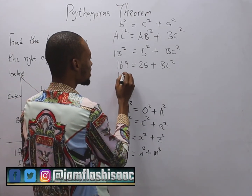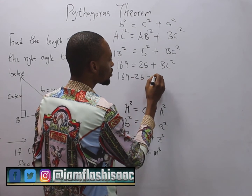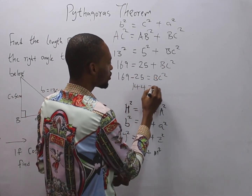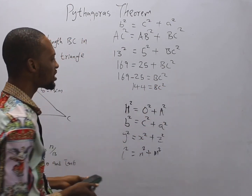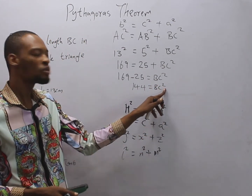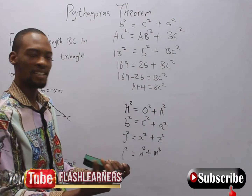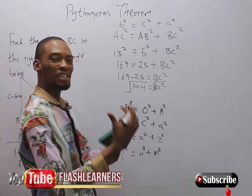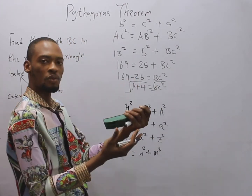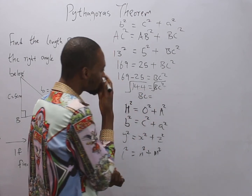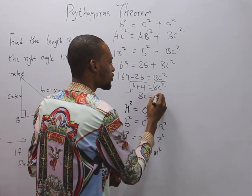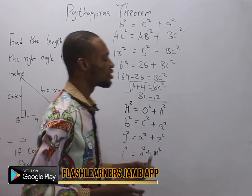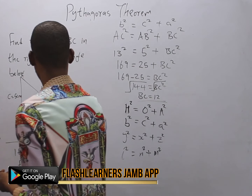Continuing: 169 − 25 = BC², so BC² = 144. To remove the square, we take the square root of both sides. BC = √144 = 12, because 12 × 12 = 144. So the answer is BC = 12.